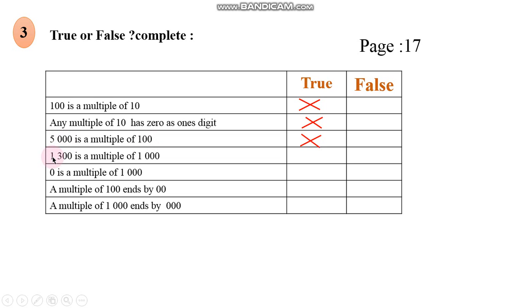1,300 is a multiple of 1,000. Multiples of 1,000 should end with 3 zeros. Does 1,300 end with 3 zeros? No, so false.